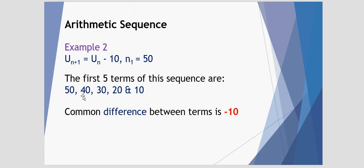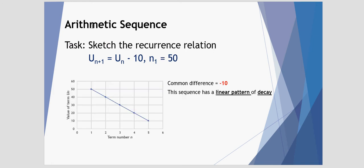So this has a common difference of minus 10. From 50 to 40, we drop down by 10. From 40 to 30, we drop down by 10. From 30 to 20, we drop down by 10. Because the difference is common, this is another example of an arithmetic sequence. Graphing it, we can see for the first term, n equals 1, we have a value of 50, n equals 2, it drops to 40, n equals 3, it drops to 30. It has a common difference of minus 10. This sequence, again, has a linear pattern, but it is a decay because we start with a high value of 50 and we end with a low value of 10. So it's reducing or decaying.